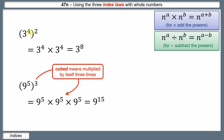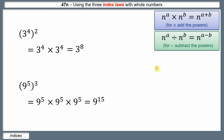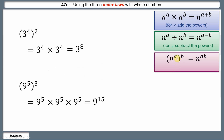It's the same pattern: in the first example we got 4 times 2 equals 8 as the final power. So the third index law is: when you have a power inside and outside a bracket, the powers get multiplied. In algebra we write it without a times sign: n to the power of ab. So in this case, multiply the powers.